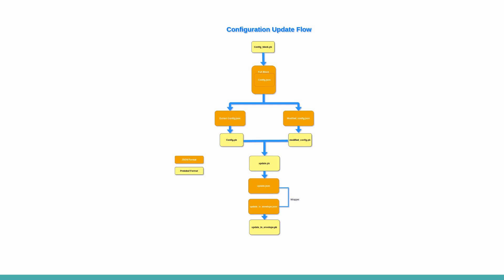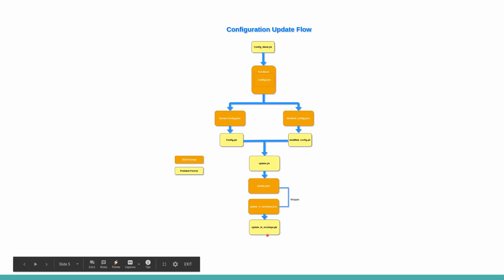The configtxlator tool understands only protobuf format, so we convert the extracted config.json and the modified configuration into protobuf format and compute the update using these two protobuf blocks. We then get one protobuf update block, re-add the channel header wrapper, convert back to JSON, add the wrapper, and convert to protobuf format again for the final updated block. We sign this configuration update block and send it to the orderer, and we will get a successful response once it is properly submitted. In the next video we will cover the remaining sections of this course.